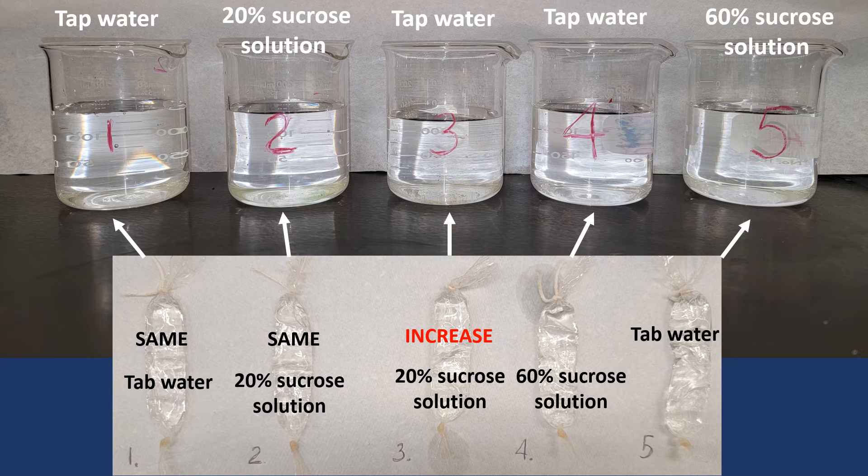If we submerge dialysis bag number four filled with 60% sucrose solution into beaker number four containing tap water, will the bag mass increase, decrease, or stay the same? Think again. Is the solution in beaker four hypertonic, hypotonic, or isotonic? You are correct. It is hypotonic. Therefore, over time, the molecules of water will rush into the bag from the beaker. This will cause an increase in bag mass.